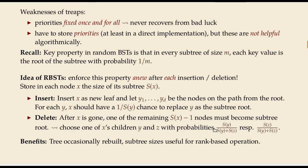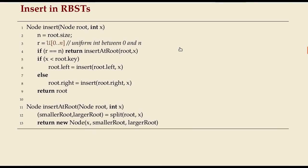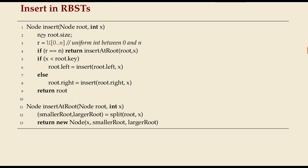The basic ingredients missing are: how to join two trees into a single one, and how to split a tree so that we can insert x as the new root of a subtree. Here's the code for insert that makes use of the procedure insert-at-root. This is a randomized procedure — it always picks a uniform number between zero and n, so one of n+1 choices, because n is the size before we updated it. The insertion procedure also has to update the subtree sizes after coming back from recursive calls.